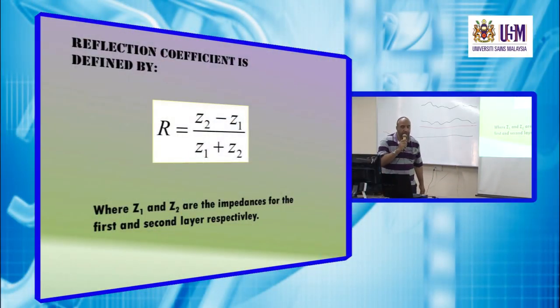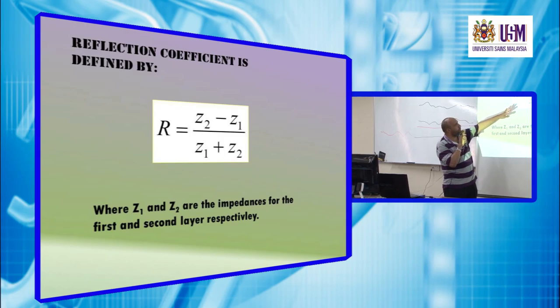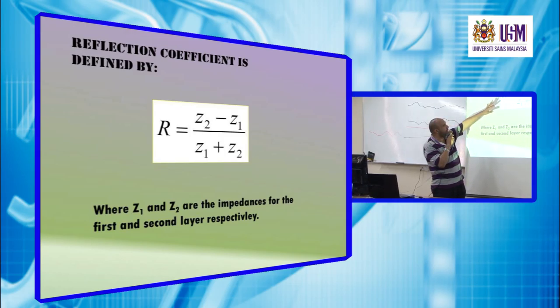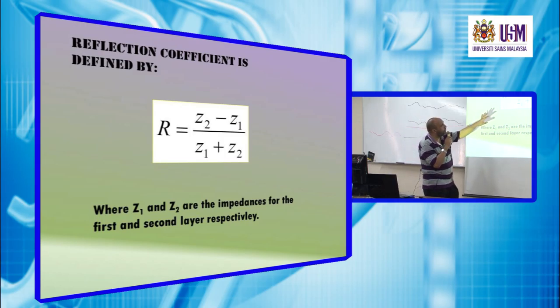Reflection coefficient is defined by this relation, Z2 minus Z1, where Z2 is the elastic impedance of the second medium, and Z1 is the elastic impedance of the first medium. So it's Z2 minus Z1 divided by Z1 plus Z2.